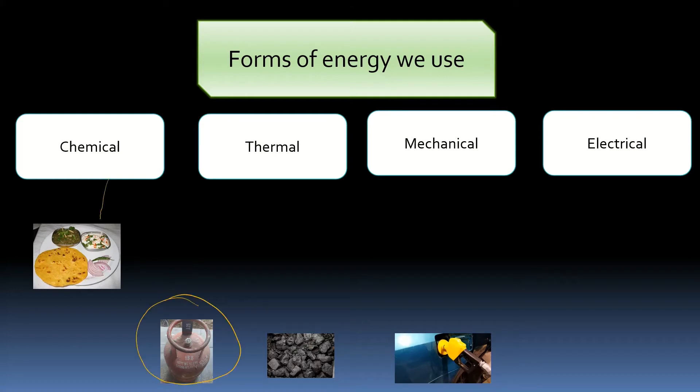Food, LPG, coal and petroleum are examples of chemical energy which we use daily. Thermal energy is the heat which we use in our daily life. The heat may come from LPG cylinder or coal or wood. So many sources are there where you convert chemical energy into heat energy.